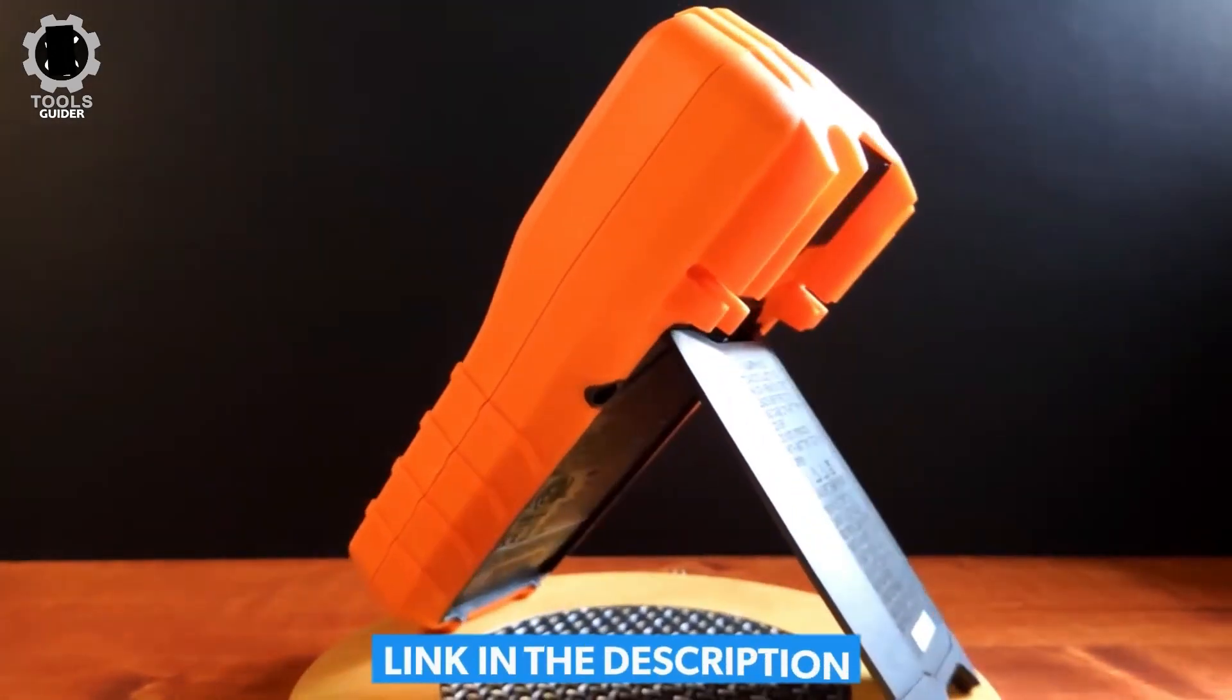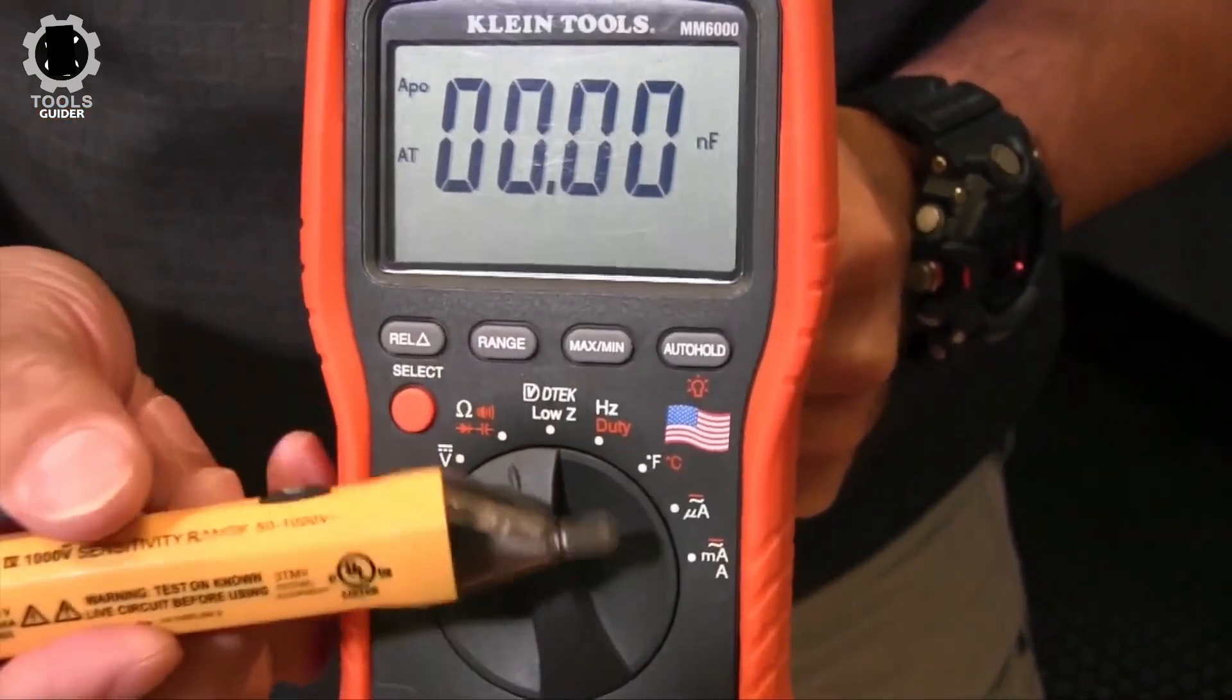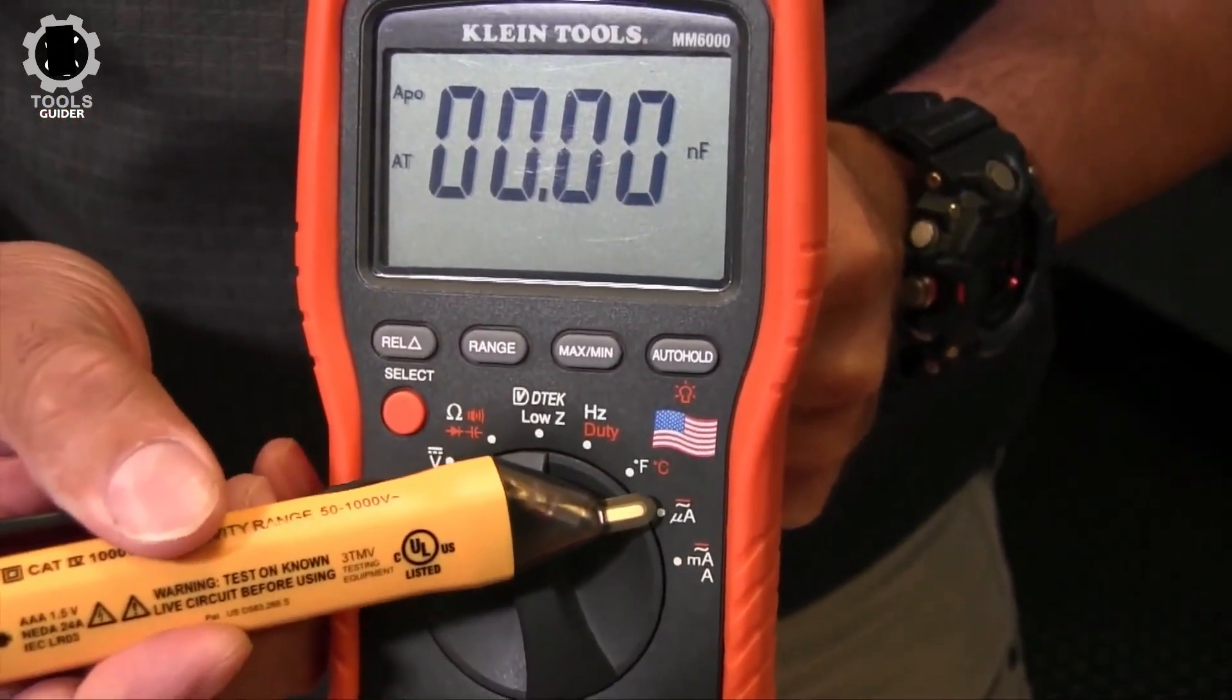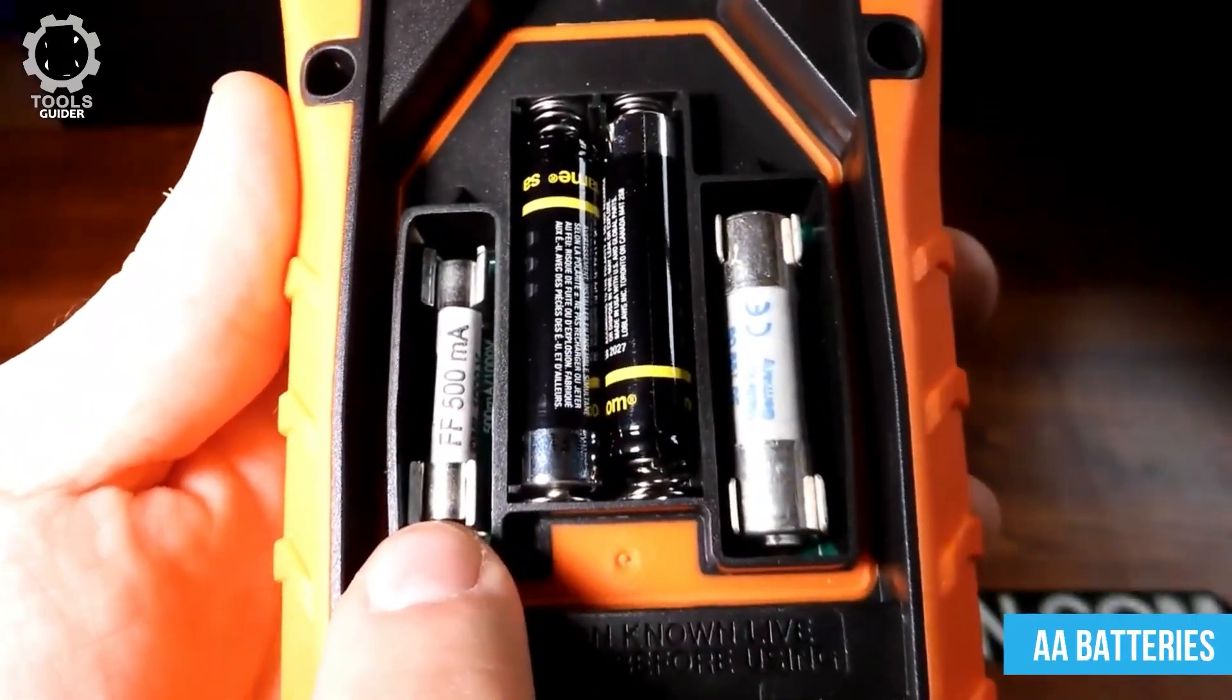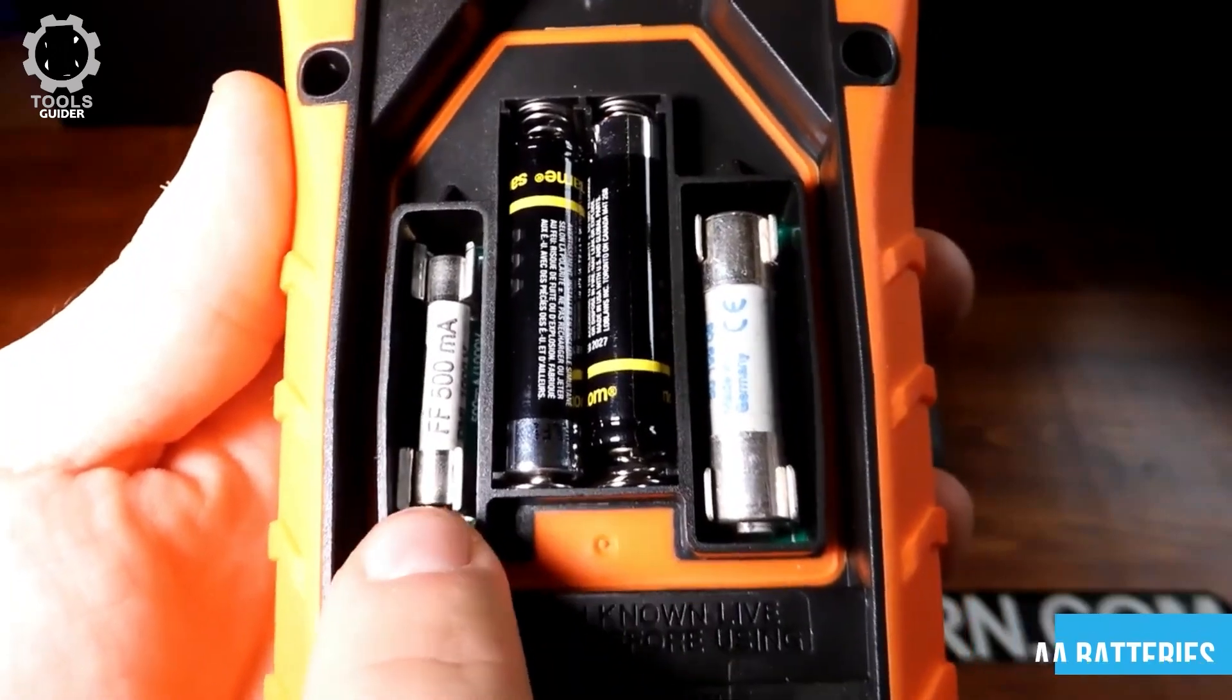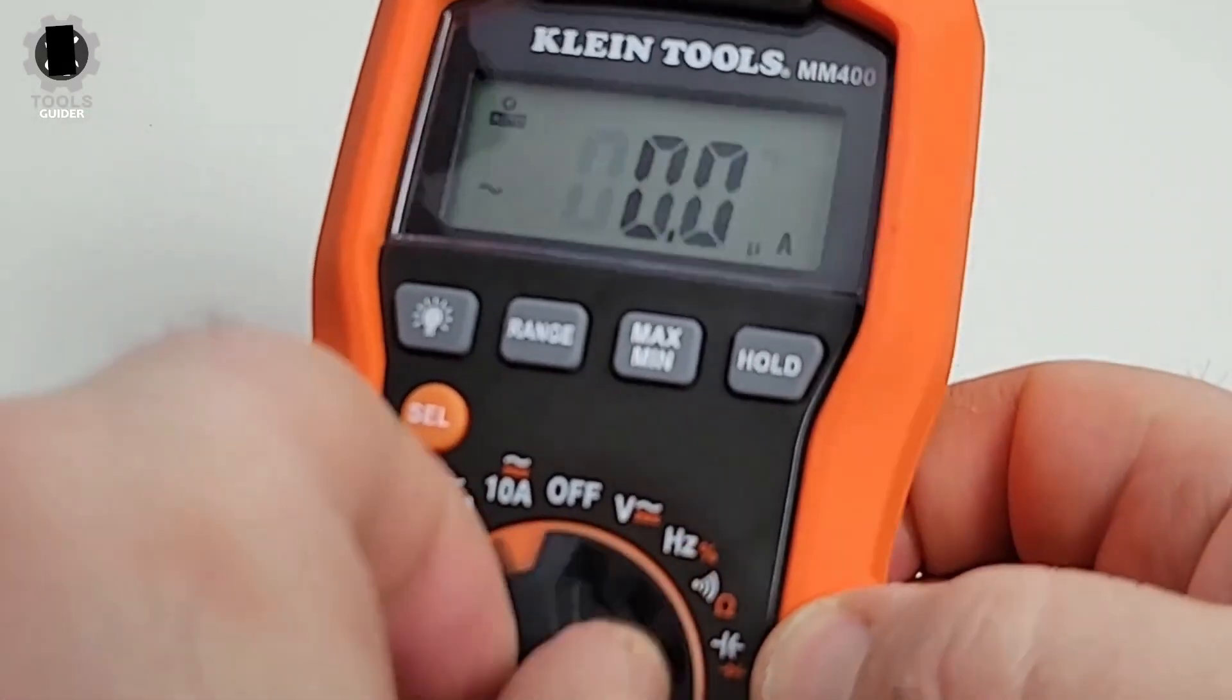It can also measure temperature, capacitance, frequency, duty cycle, test diodes and continuity. This digital multimeter runs on a pair of AA batteries, which are cheap and readily available. It's built to last. The Klein Tools MM400 Multimeter is designed to withstand drops from a height of 3.3 feet.